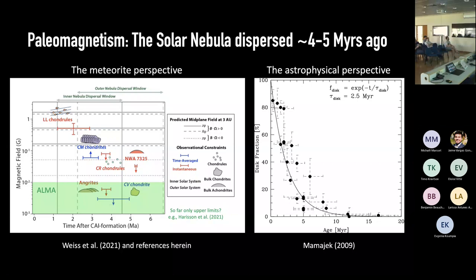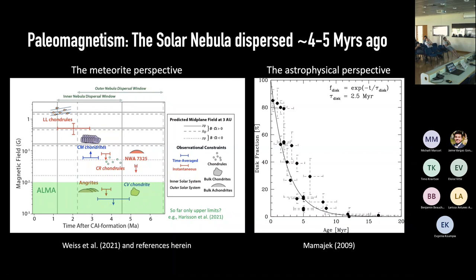In theory, ALMA, through circular polarization measurements, should be able to infer the presence of magnetic fields around young stars of only a few hundred to a few thousand gauss. From the literature, I could only find upper limits — there are some detections of linear polarization, but the origin of that signal is not entirely clear. From the meteorite record, some meteorites were magnetized at a few gauss, which should in theory be detectable with ALMA. So this is an encouragement for people working with ALMA to pursue these measurements.